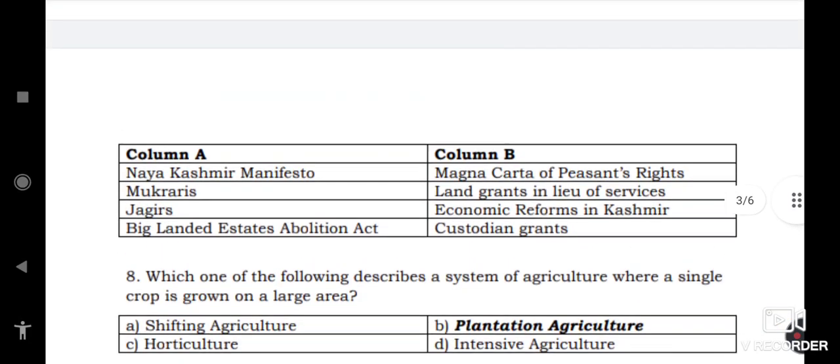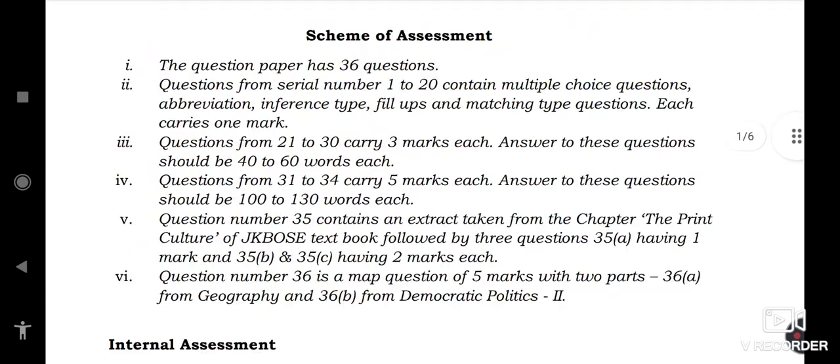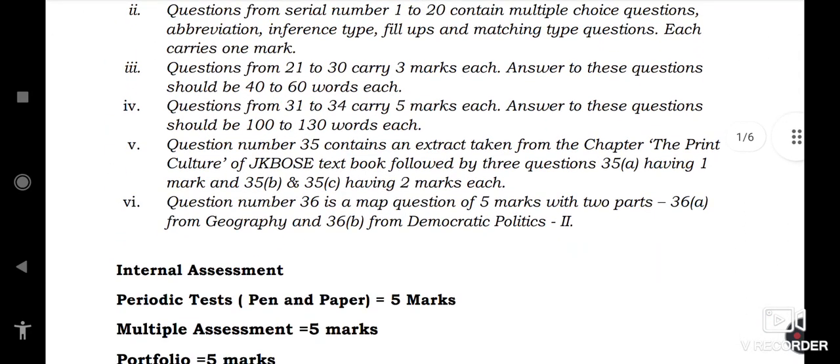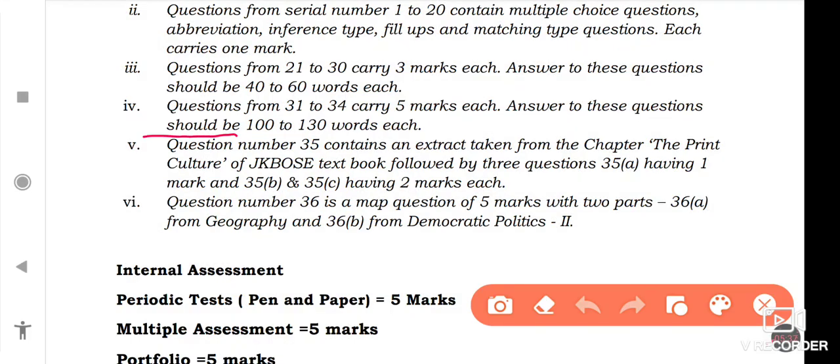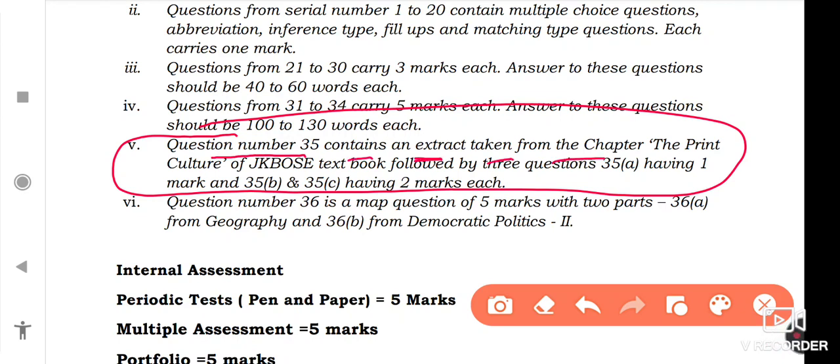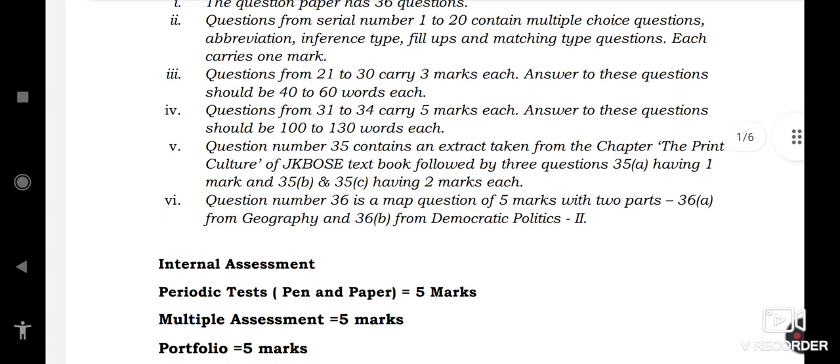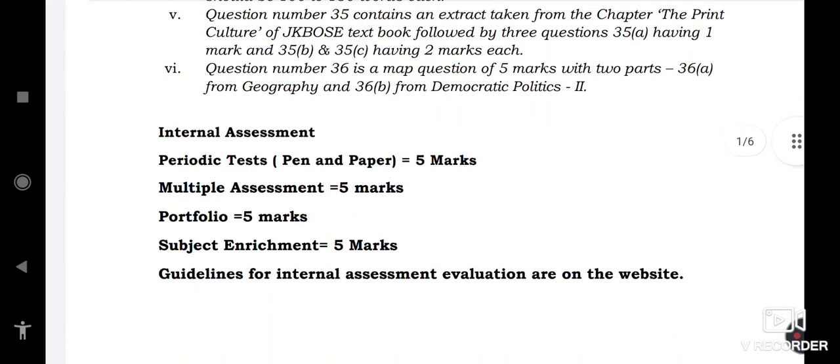And one more thing: this question was asked by one of the students, whether passage from print culture will come or not? It is clearly mentioned over here. Question number 35 contains an extract taken from the chapter The Print Culture of JK Bose textbook followed by three questions: 35A having one mark, 35B and 35C having two marks each. So do not confuse yourself with any other information. Whatever is given by JK Bose initially, follow that only.